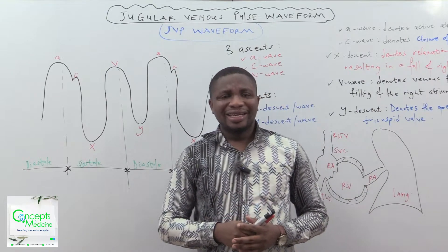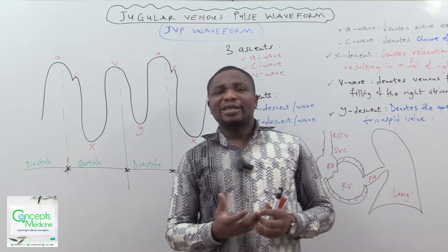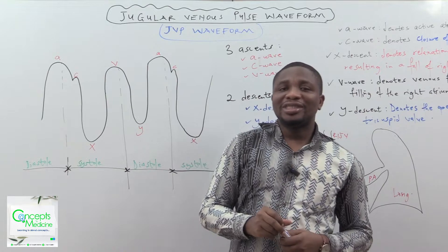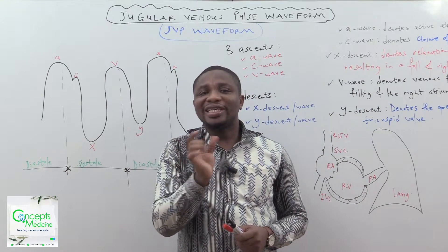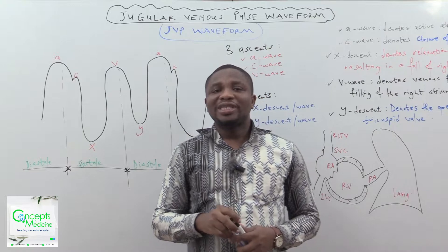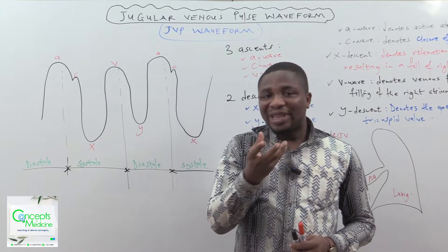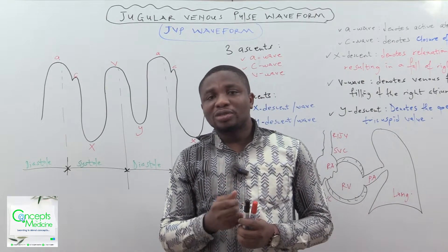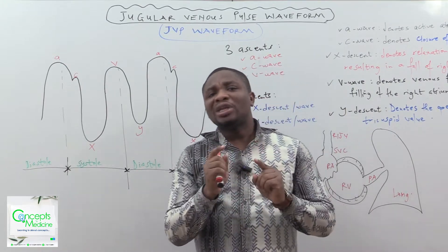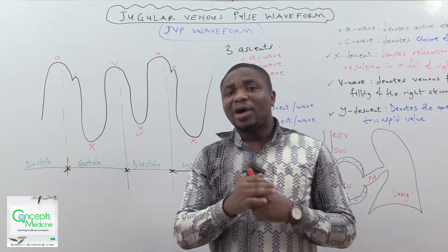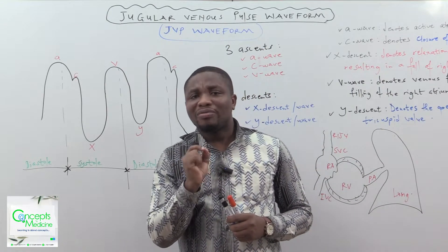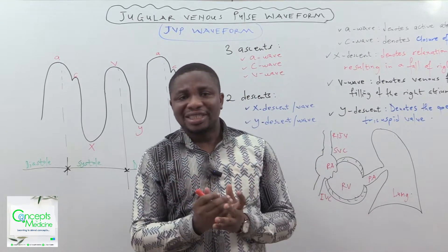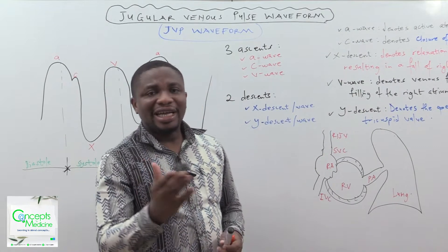When we say jugular venous pulse, take a bottle of water and hold it still and observe the top of the water. You will notice that the top of the water will be oscillating, it will be moving, it will be in motion. So when we say the oscillating top of that water, literally, that is the jugular venous pulsation, or simply the jugular venous pulse. But if we come into medicine, we will say that the jugular venous pulse refers to the oscillating top of a vertical column of blood in the right internal jugular vein that reflects the pressure changes in the right atrium.